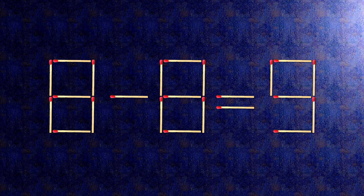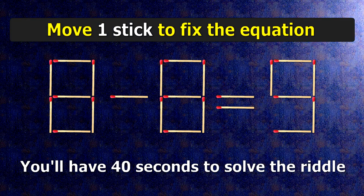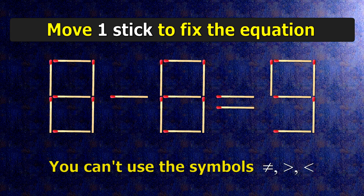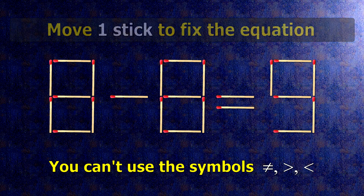We have the equality 8 minus 8 equals 9. Our equality is wrong. We need to move one match to make our equality correct.